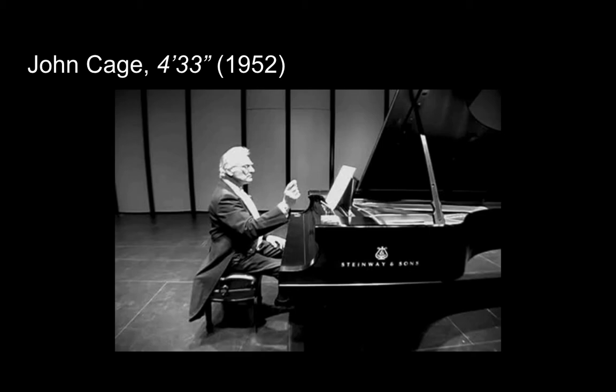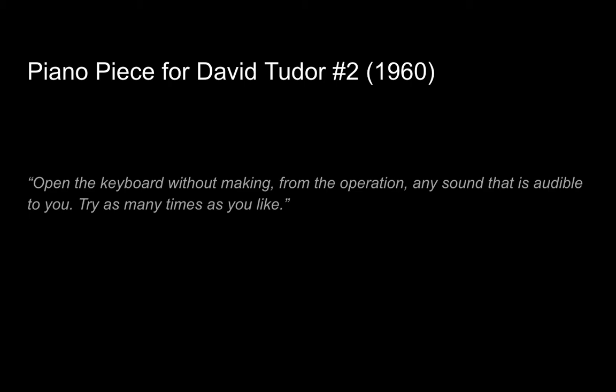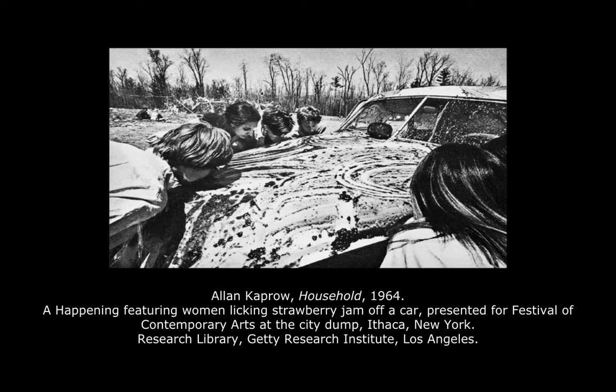The sheer spontaneity of 4 Minutes 33 Seconds was an important precursor to Alan Kaprow's happenings. Cage referred to his works as scores, and this is the score for a piano piece for David Tudor No. 2 from 1960: 'Open the keyboard without making from the operation any sound that is audible to you. Try as many times as you like.' Minimal by design, these scores availed themselves to interpretation and chance, tenets later embraced by the Fluxus group, and also seen in the happenings especially those orchestrated by Alan Kaprow, who studied under Cage at the New School.